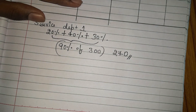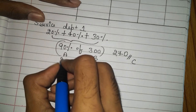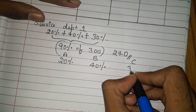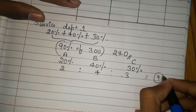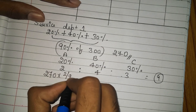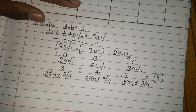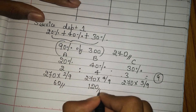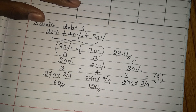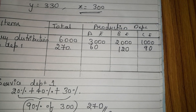The 270 rupees is divided among A, B, and C in the ratio 2:4:3 (20%, 40%, 30%). A gets 270 × 2/9 = 60 rupees, B gets 270 × 4/9 = 120 rupees, C gets 270 × 3/9 = 90 rupees. Total = 270. This completes service department 1 distribution.